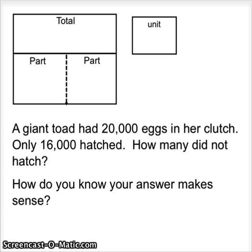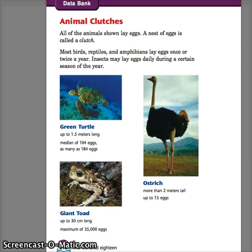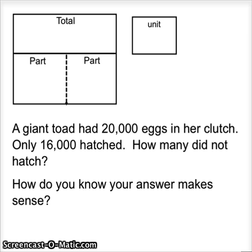Let's take a look at the giant toad. The giant toad can be up to 30 centimeters long, and it has a maximum of 35,000 eggs. This number is quite a bit bigger than the other ones, 35,000. It says, a giant toad had 20,000 eggs in her clutch. Only 16,000 hatched. How many did not hatch?